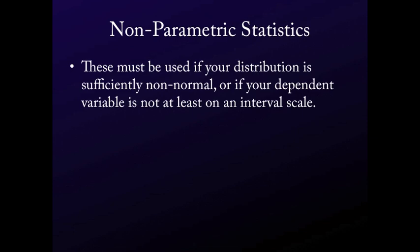Another instance when you're often going to use non-parametric statistics is if your dependent variable is not measurable on an interval scale. For example, if all you had were yes-no responses and you didn't have something like a 1 to 7 scale, you would have to use non-parametric statistics because you don't have your dependent variable on at least an interval scale. In order to run parametrics, your dependent variable should be on an interval scale or a ratio scale. But if you have it on an ordinal scale or a nominal scale, you're going to have to also use non-parametric statistics.